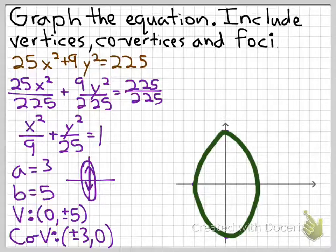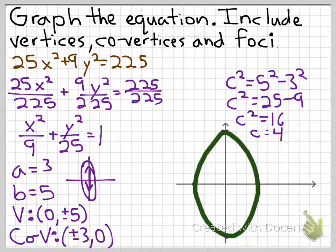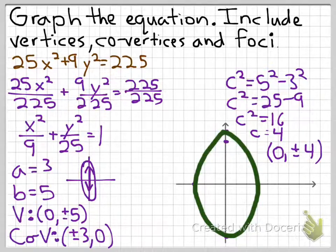We're missing the foci. With a equal to 3 and b equal to 5, we compute c squared equals 5 squared minus 3 squared, which gives 25 minus 9 equals 16, so c equals 4. Since the main axis is vertical, the foci go up and down at 0, plus or minus 4. In this case it works out to a whole number. Make sure you plot and label all vertices, co-vertices, and foci when doing your homework.